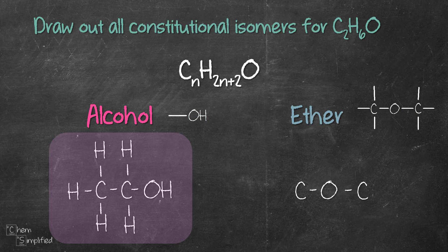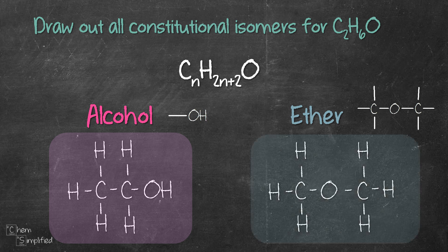Now that we've used up the two carbons and one oxygen, we'll fill in the rest of the bonds on carbon with hydrogens like this. There we go! We're done drawing out all the isomers for C2H6O.